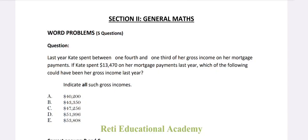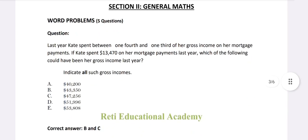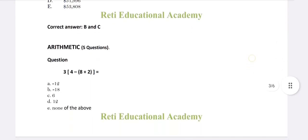You have to select all the options which are correct. The right options are B and C. If you need an explanation, just comment and we will upload the full explanation of this video. Arithmetic — there will be five questions on arithmetic.